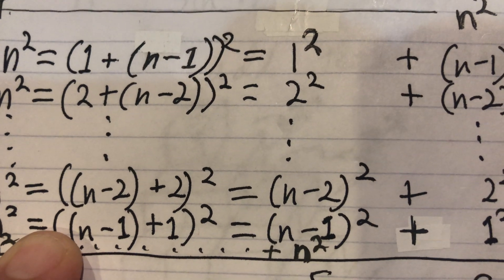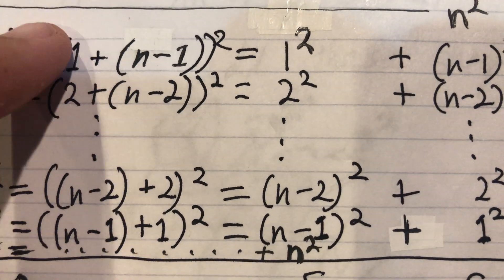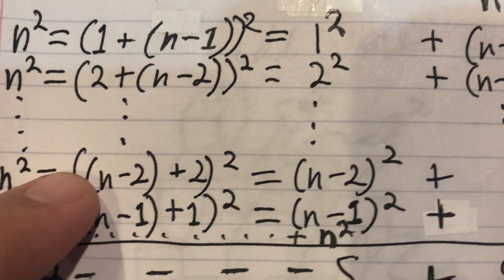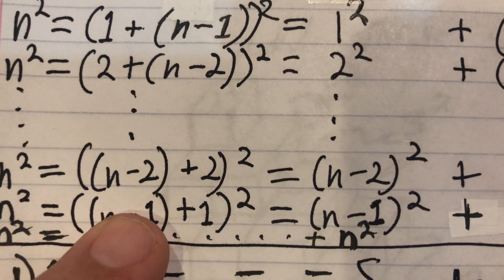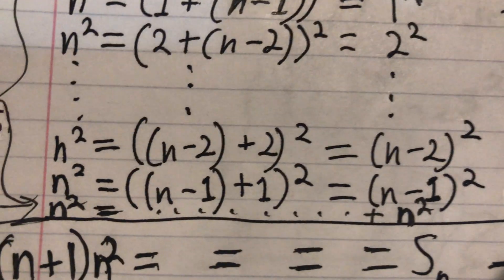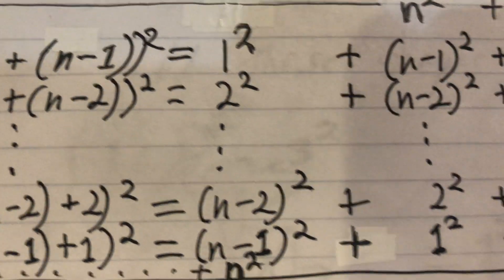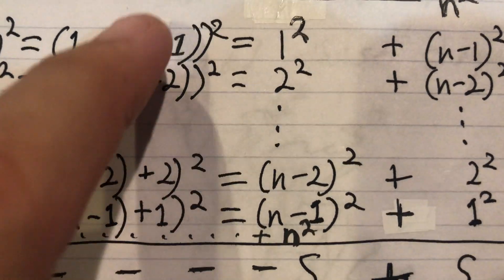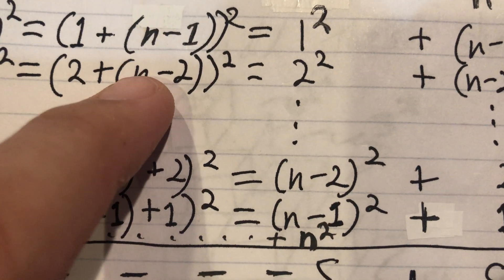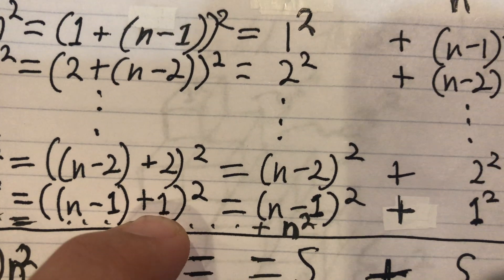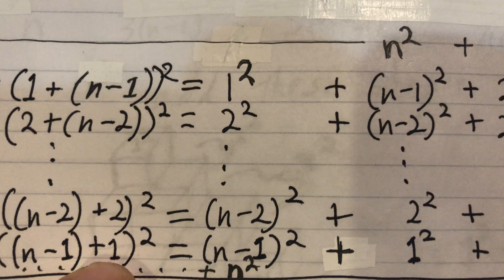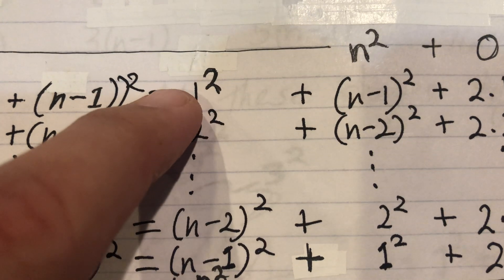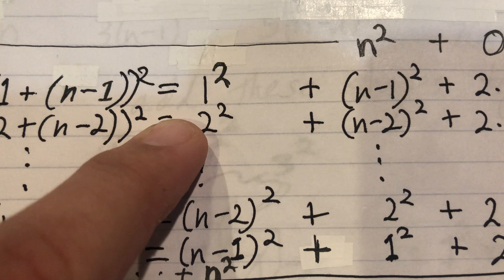We're going to keep doing that from one through n minus one — going all the way through one, two, three, four, five, dot dot dot, to n minus two and up to n minus one. We do the same thing, going down from n minus one, n minus two, all the way down to one.